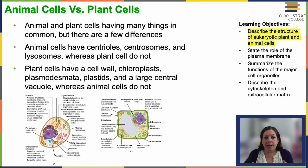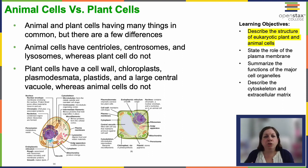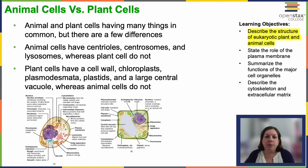The cell wall, plastids, and central vacuole all have to do with structural differences between plant and animal cells — how they maintain their shape and how they're connected to other cells. There's a rigidity to plant cells that animal cells lack in most cases. And of course chloroplasts — that's how plants carry out photosynthesis, which we don't see in animal cells.